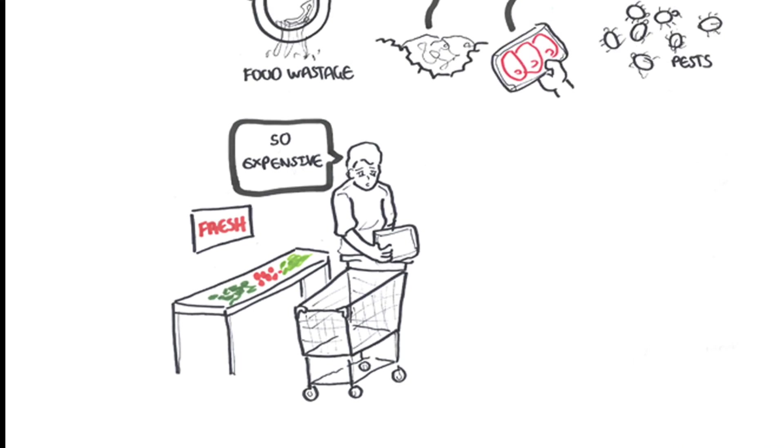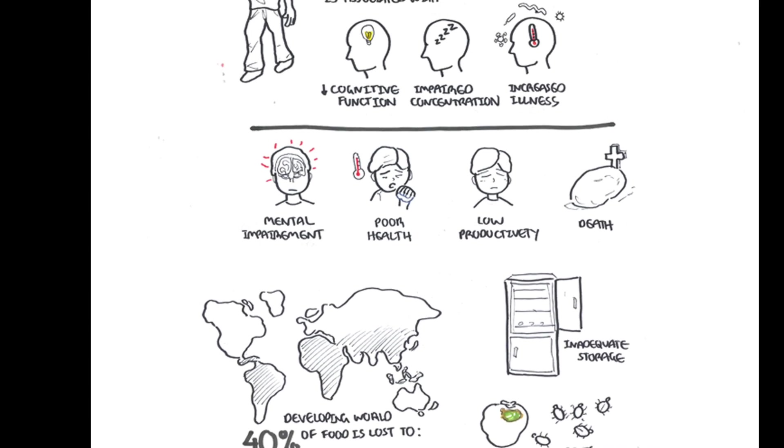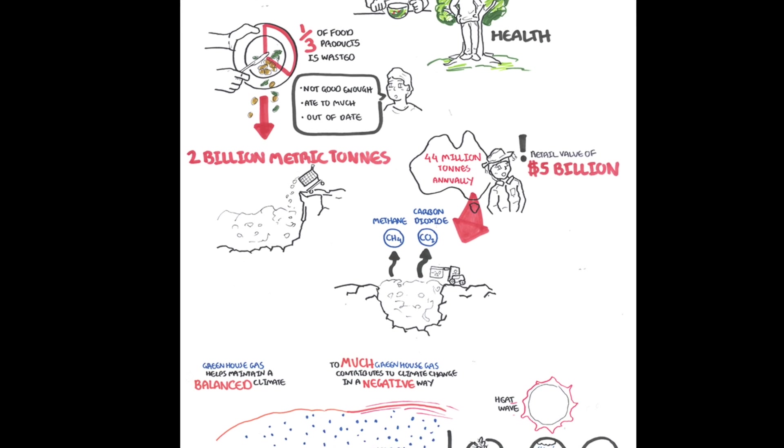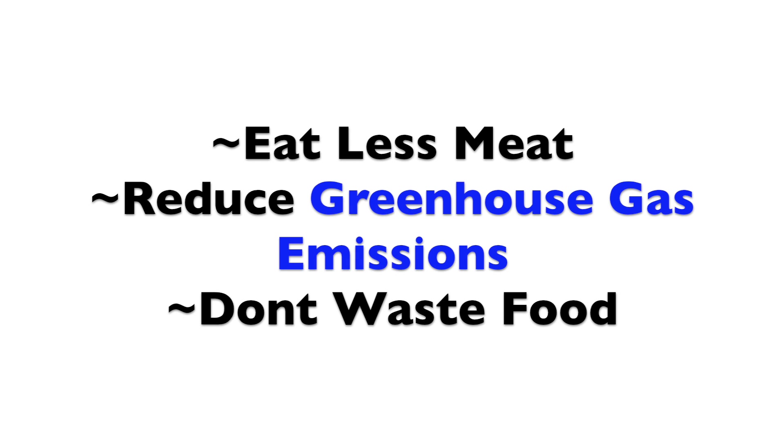In summary, food systems have an enormous impact on the health and well-being of our global populations. The take-home message: as a population, we need to eat less meat, reduce greenhouse gas emissions, don't waste food, and donate excess food to those who need it.